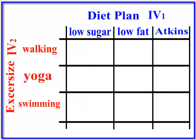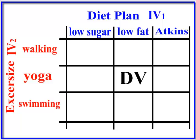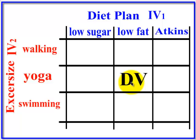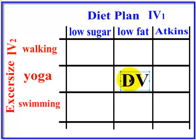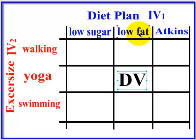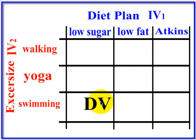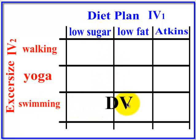Now we're going to start pretending we have data. The top is the IV for diet plan, and here are the different exercises going this way. The DV goes in the cells. So this number in a cell would be the average weight loss for everybody in, say, the low-fat diet and yoga group. This one would be the mean weight loss for everybody on the low-sugar diet who also does swimming, and so on. So these are the DVs in the cells.